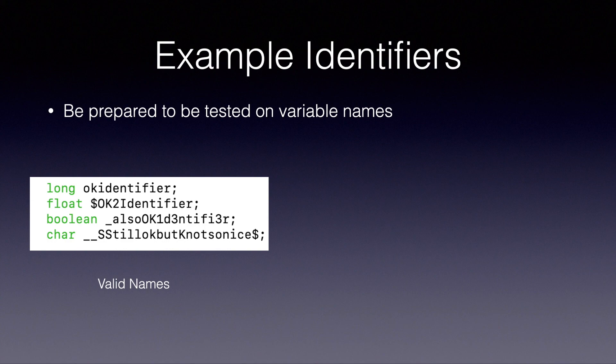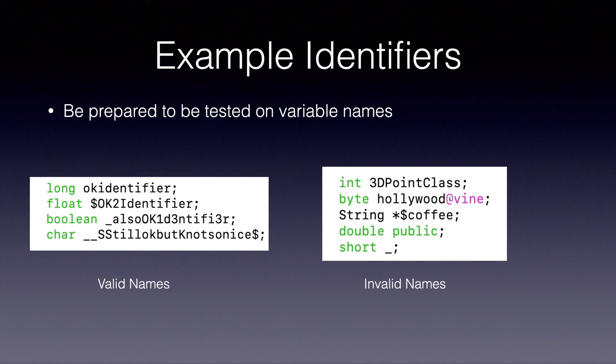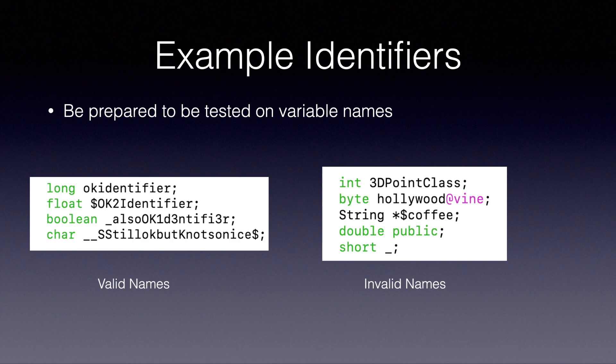Now this image has all the invalid variable names. The first one starts with a number, which we know is not allowed. The second variable has a special character — the at-sign — and only two special characters are allowed: dollar and underscore. The third one has a special character, the star, and the variable name is also starting with a star, which is not allowed. In the fourth line, we are using a reserved word, public, as a variable name, which is not allowed. And underscore by itself is not allowed anymore.